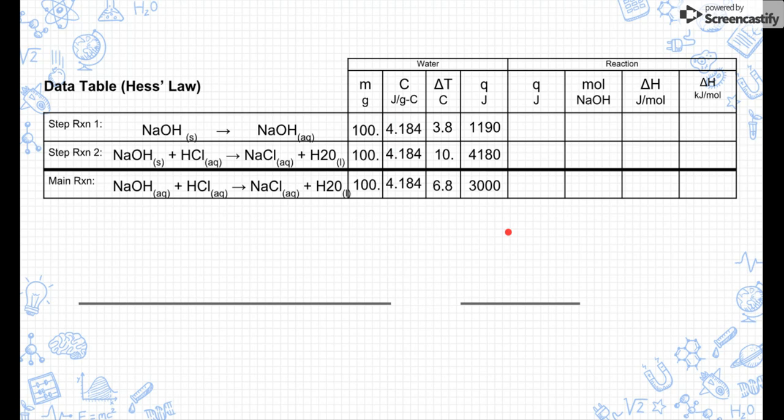So what we learned is in our first reaction, according to Q, water absorbed 1,190 joules of energy. In the second reaction, water absorbed 4,180 joules of energy, and in the third reaction, it absorbed around 3,000 joules of energy. That means our reaction had to lose that much energy. So over here in our reaction section, our reaction lost that much energy for each of those reactions. Calorimetry is where we do a reaction in water, and that just means whatever water did, our reaction is the equal but opposite amounts in terms of energy loss.